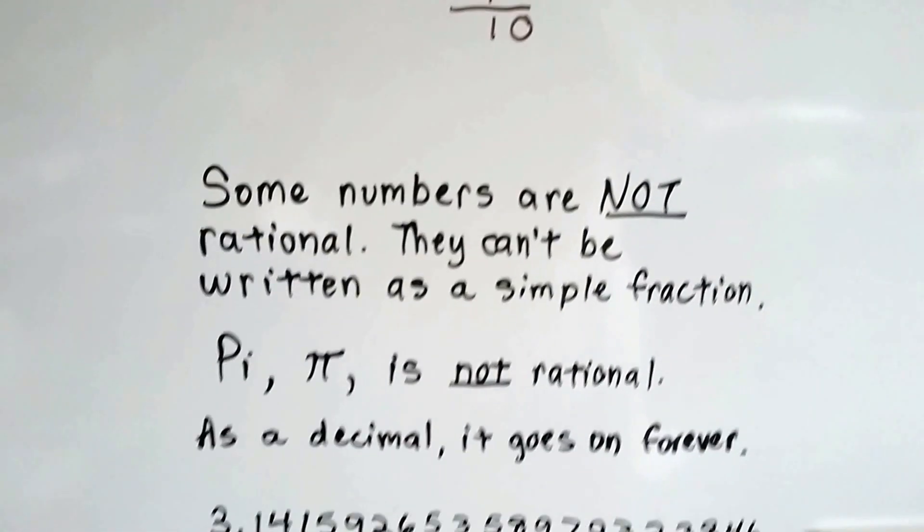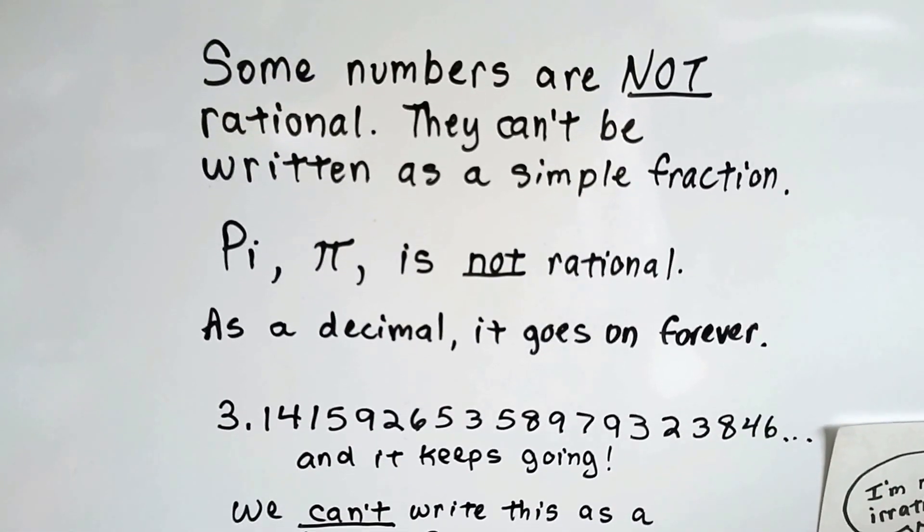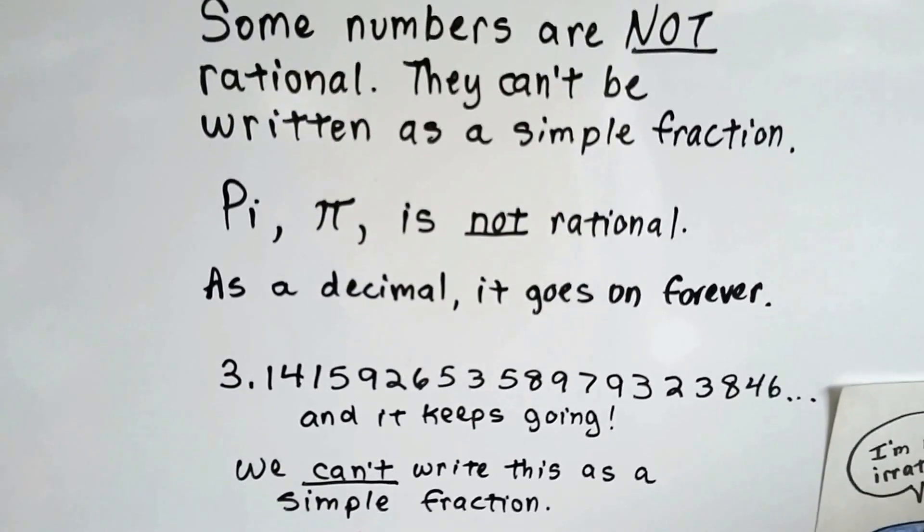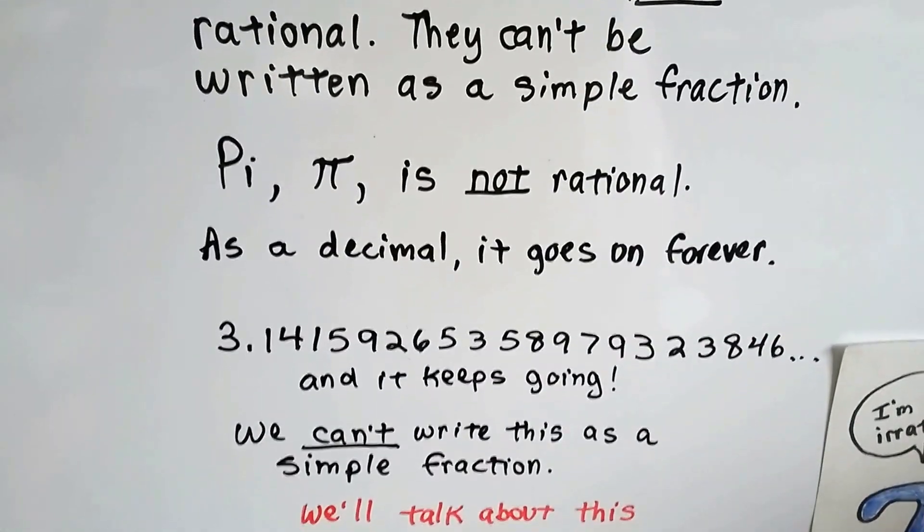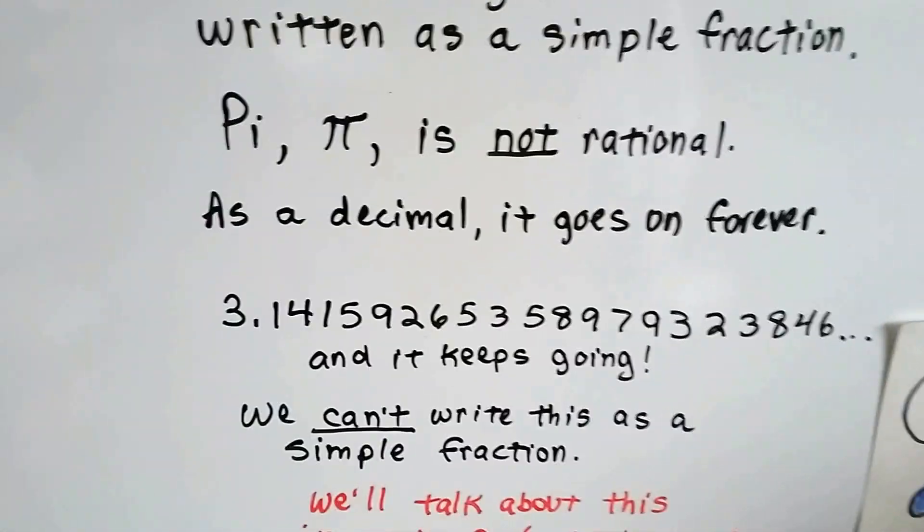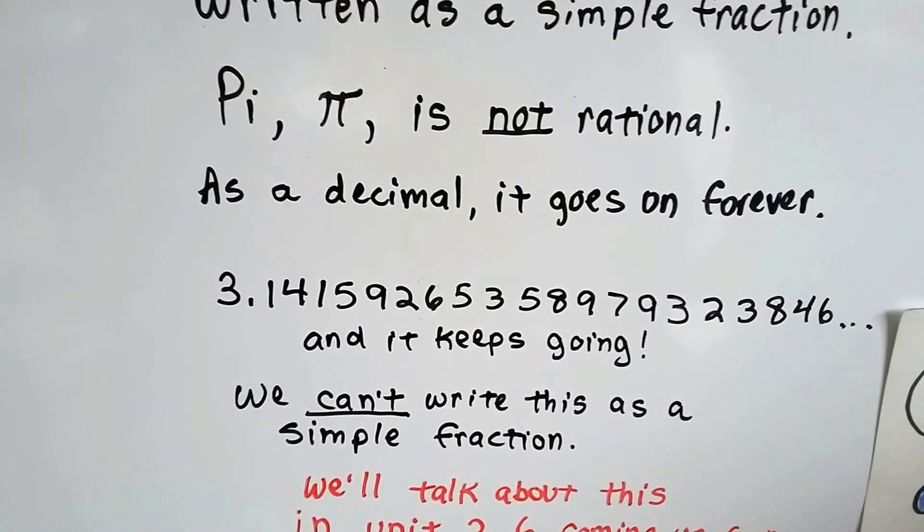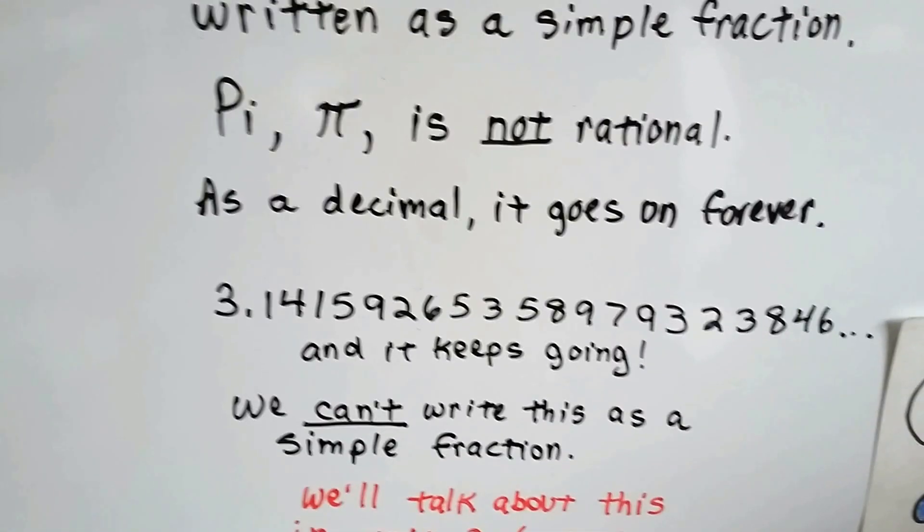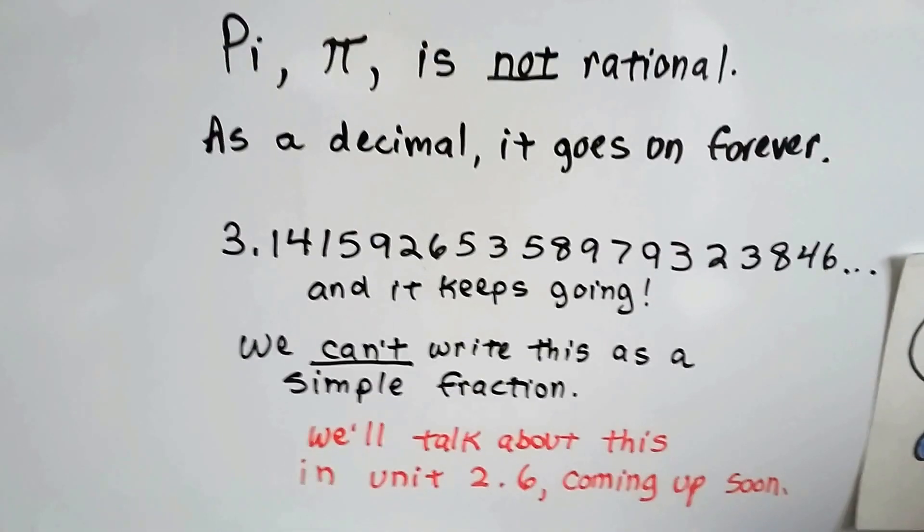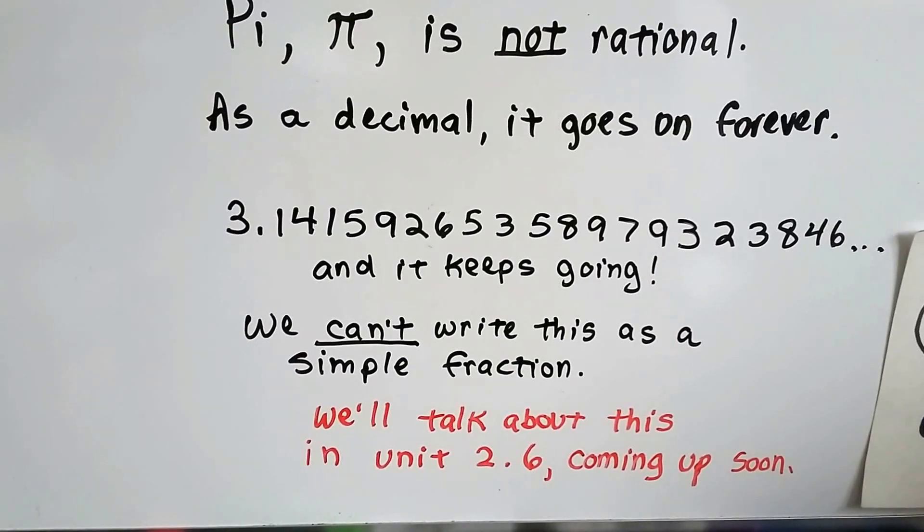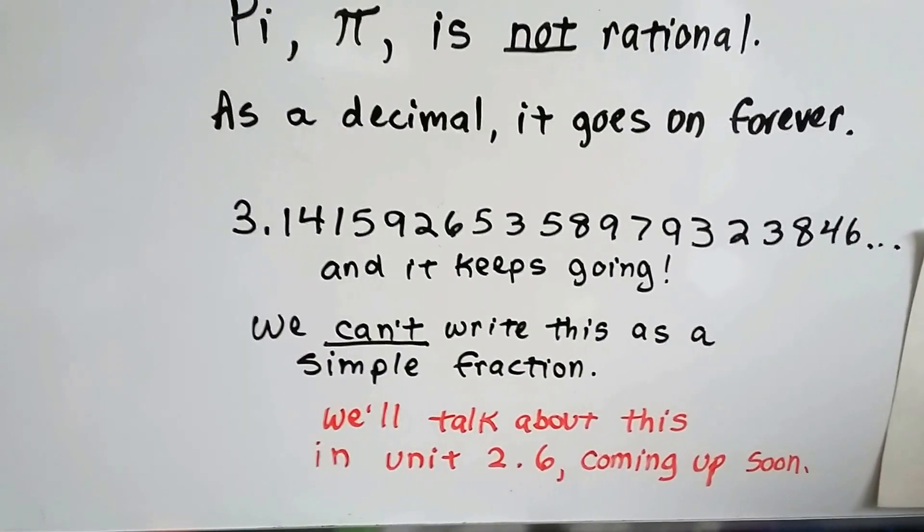Now some numbers are not rational. They can't be written as a simple fraction. And pi is not rational. As a decimal, it goes on forever. We got 3.1415926, it just keeps going and going. We can't write this as a simple fraction. And we're going to talk about this in unit 2.6 coming up soon.